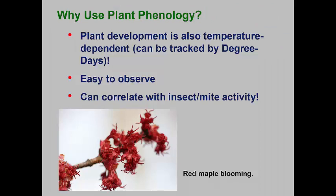If degree day targets have been developed for a pest, why should one use plant phenology? It appears that many landscape plants have the same lower threshold temperatures, so they develop at the same rates as many of the insects and mites. Second, for landscape managers who are working in the landscape, it is easy to observe when plants are setting out leaves, beginning to bloom, are in full bloom, or have finished bloom. If these plant visual clues can be associated with insect and mite events, plant phenology becomes a convenient tool to predict pest activity periods.